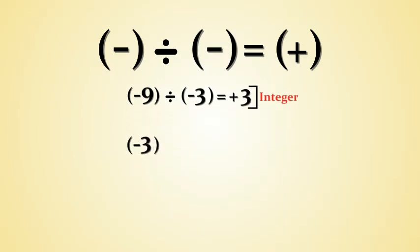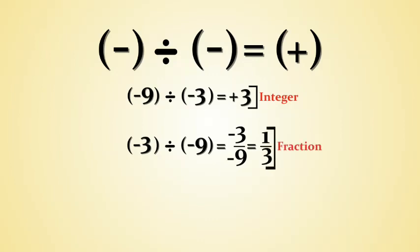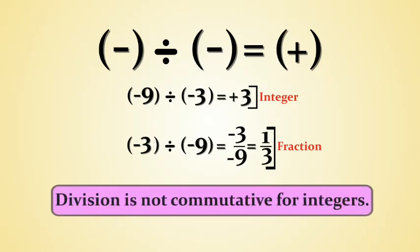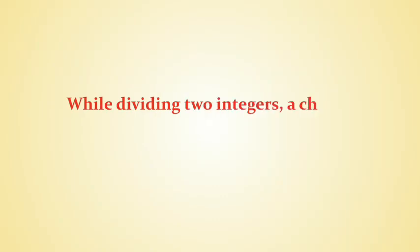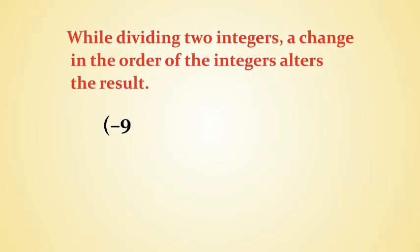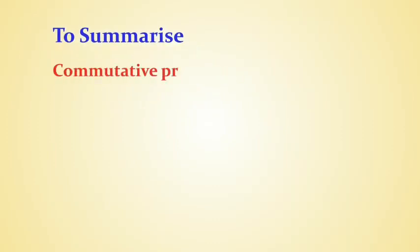Next, let's divide minus 3 by minus 9. Representing it as a fraction, minus 3 divided by minus 9, on simplifying we get 1/3, which is a fraction. The quotient is not the same in both cases. Hence, division is not commutative for integers. A change in the order of integers alters the result, so minus 9 divided by minus 3 is not equal to minus 3 divided by minus 9.